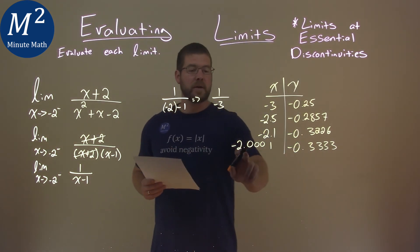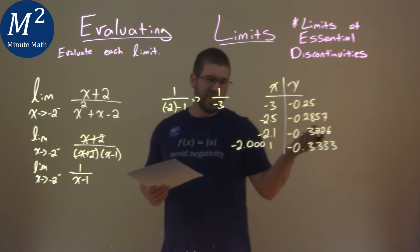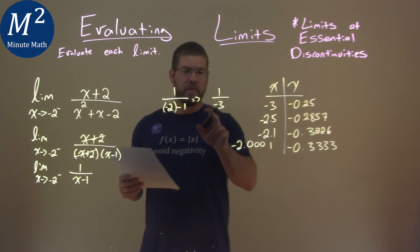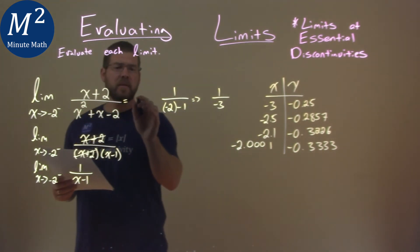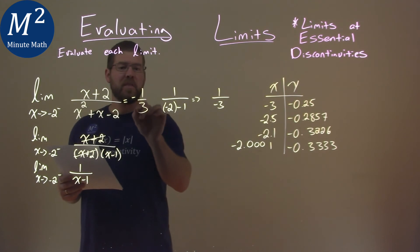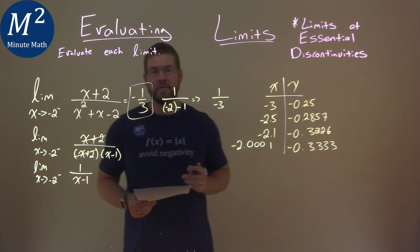And we can see as we get closer to negative 2 from the left side, we're really approaching negative 1 third. And we saw that there. And so this limit here is negative 1 third, and that is our final answer.